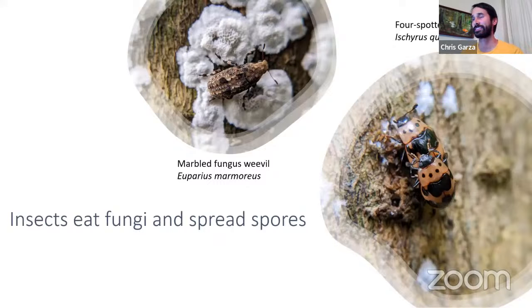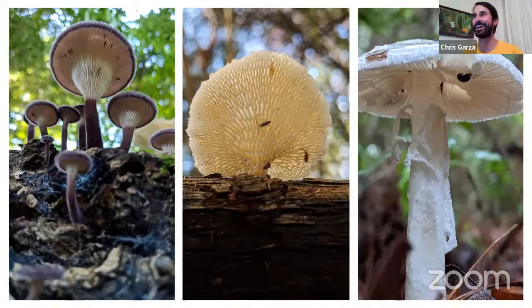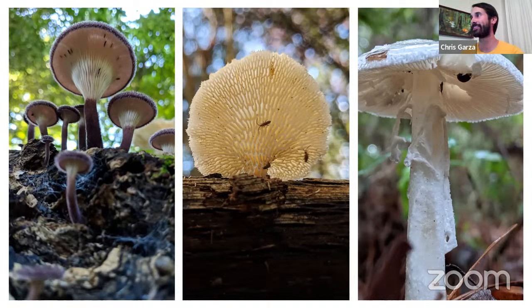Any insect eating fungi — whether specialist or generalist — is also spreading spores. They're usually walking on the fungus or passing spores through their gut, but either way they are spreading spores. Here are some examples of specialist insects: the marbled fungus weevil and the pale spotted fungus beetle. Both of these were seen on the same tree — a dead ligustrum covered in fungi. Here are other examples of insects on the undersides of mushrooms, clearly picking up spores that way and spreading them elsewhere.